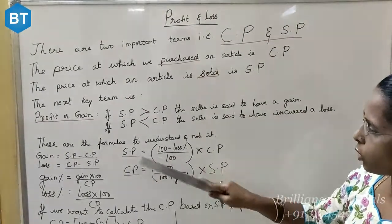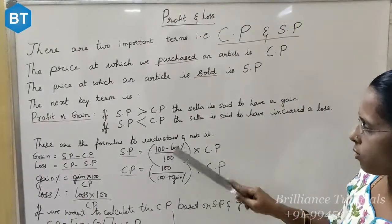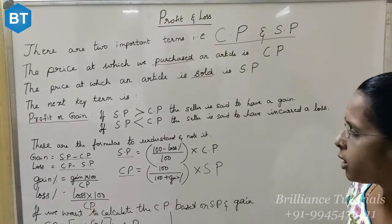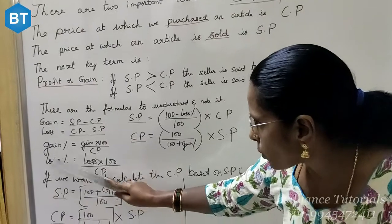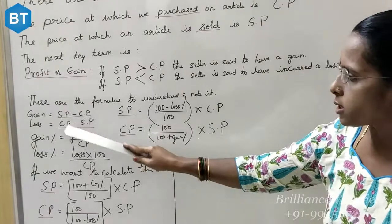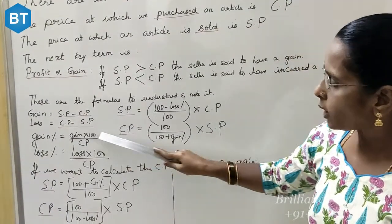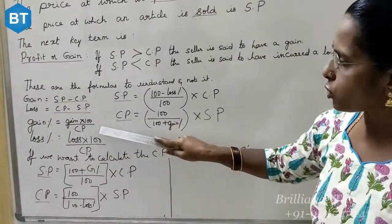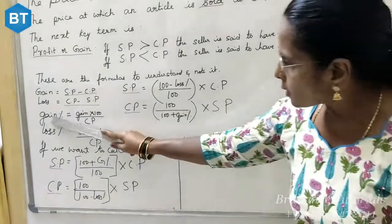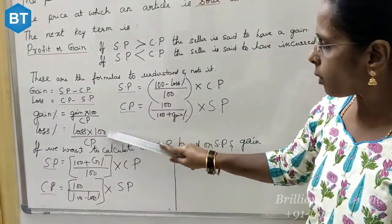You have to note that only when the loss percentage and the gain percentage are given, you substitute using these formulas. In some problems, they will ask you to find out the gain percentage. For that, multiply gain by 100 and divide by the cost price. Similarly, loss percentage equals loss into 100 divided by CP.